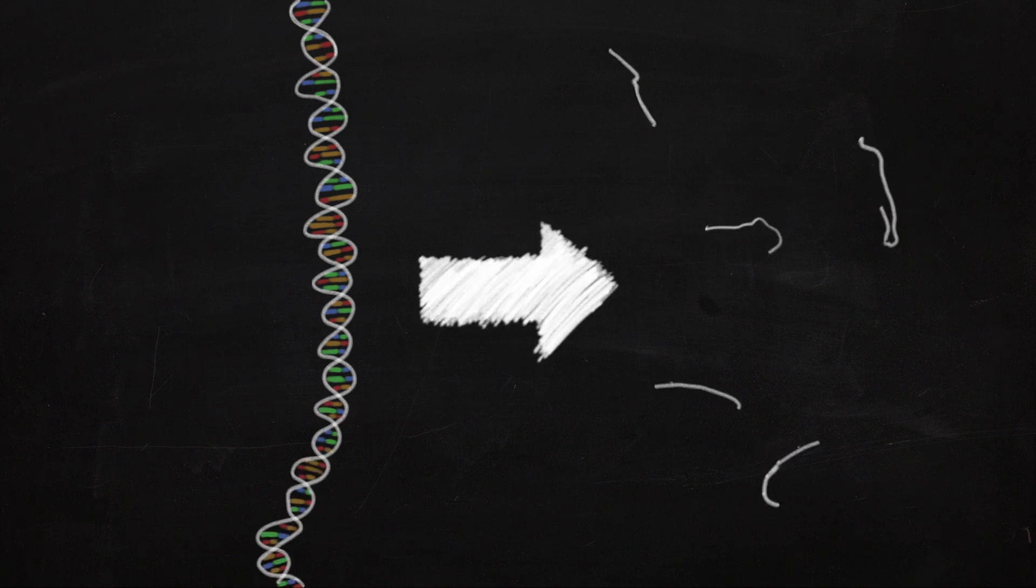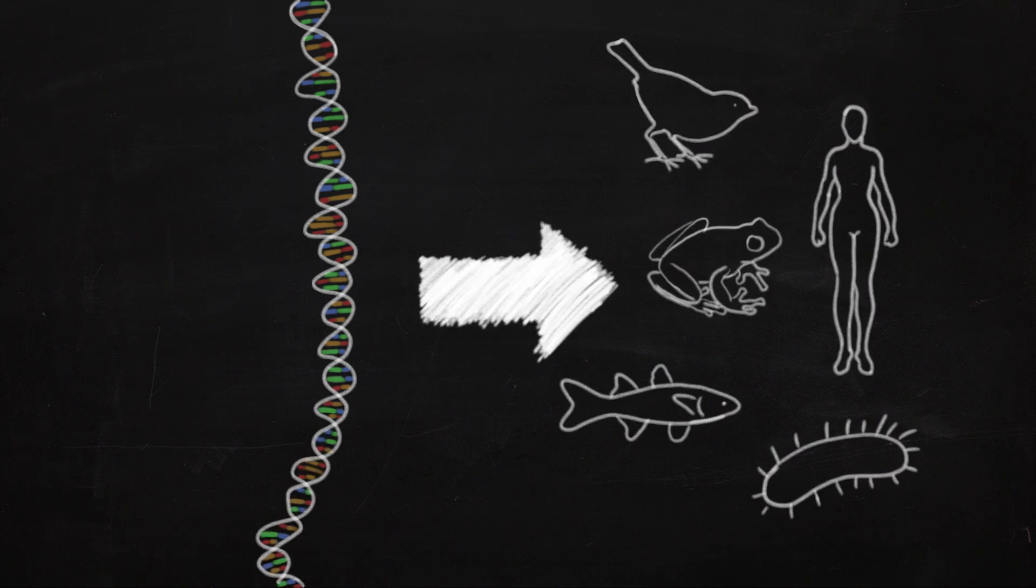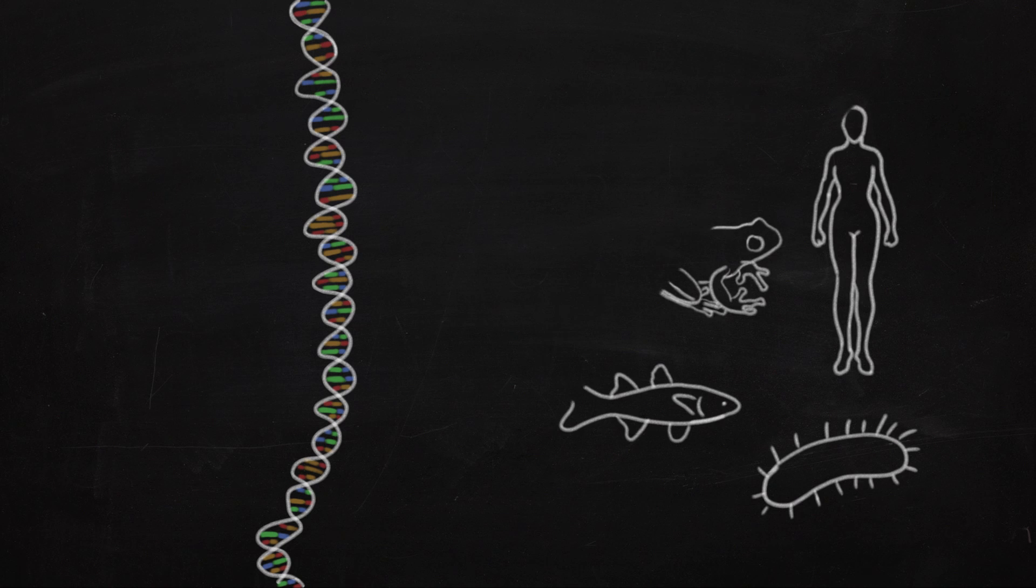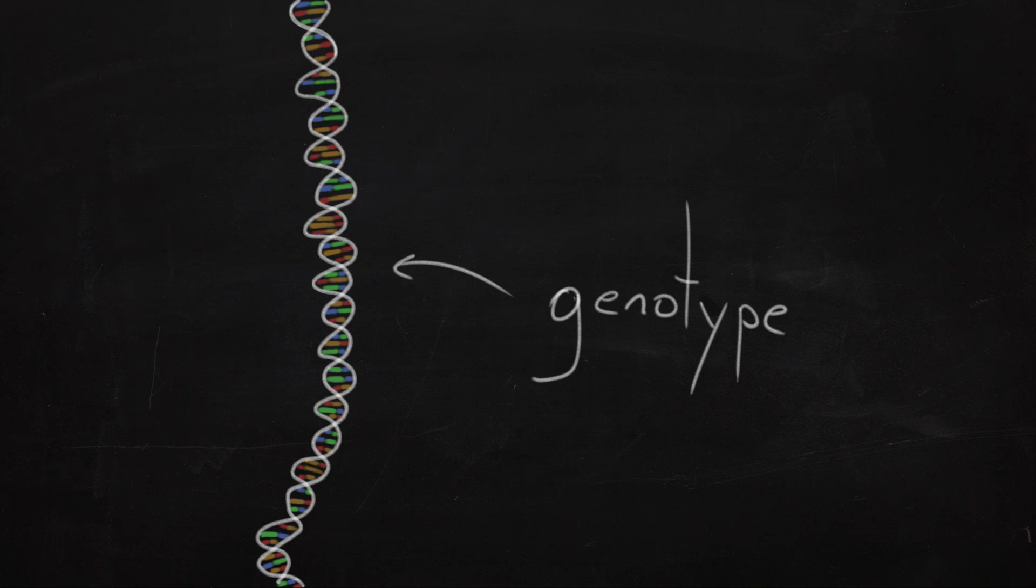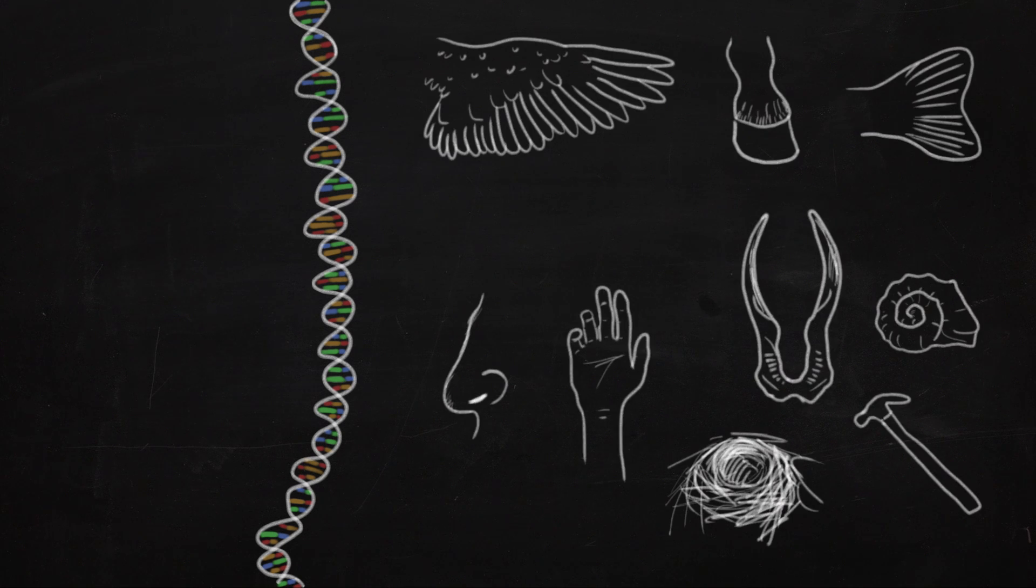DNA is the code that makes us, from cheetahs to killer whales to Don Rickles. That code is our genotype, the order of the DNA sequence. The traits that the code results in, what we see, is the phenotype.